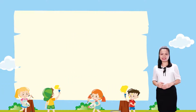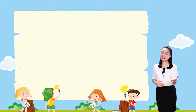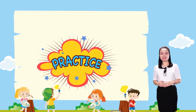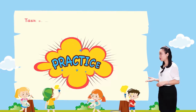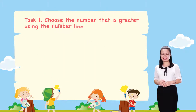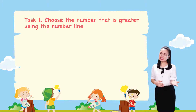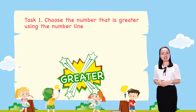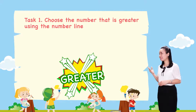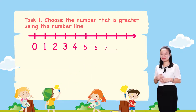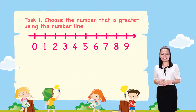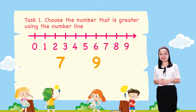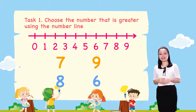Now, let's have some practice. Task 1: Choose the number that is greater using the number line. The pairs are: 7 and 9, and 8 and 6.